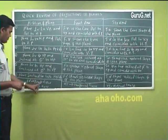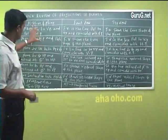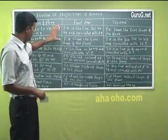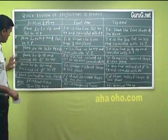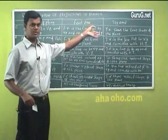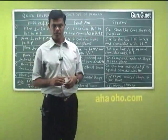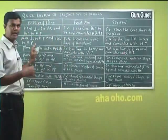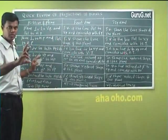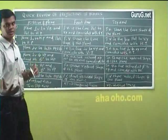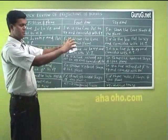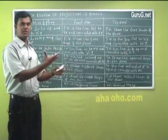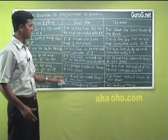FV means front view, TV means top view. These six points are very, very important for a quick review. When you read a question and understand which condition applies, you immediately know how the front view and top view should look, and you can easily draw the sketch. This applies to unit two planes and unit three solids — solids is just a continuation of planes with thickness added.